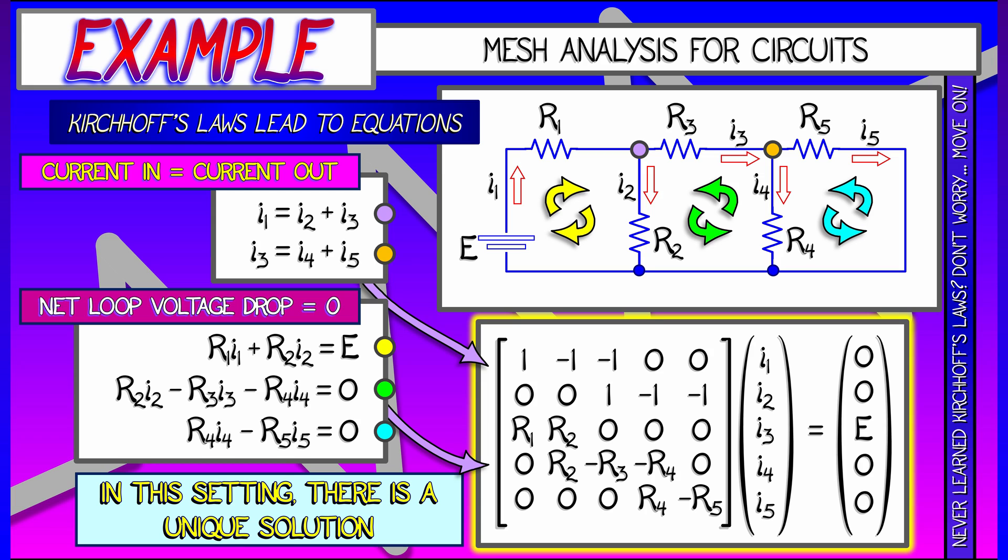Five equations, five unknowns. We can solve this. There's a unique solution, and that tells you how the electricity is flowing through the circuit. That's the basic idea of simple mesh analysis. Just using Kirchhoff's laws, you get to a system of linear equations.